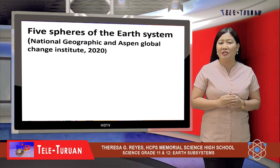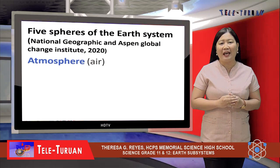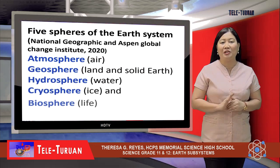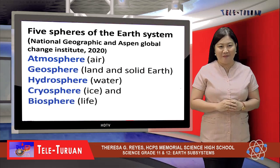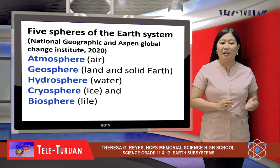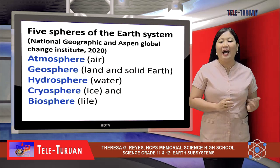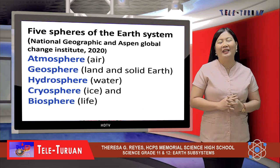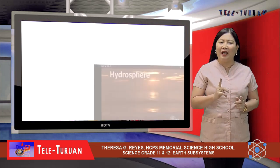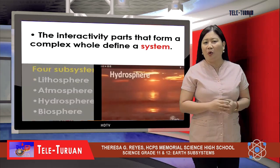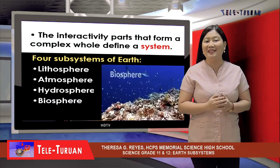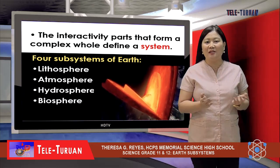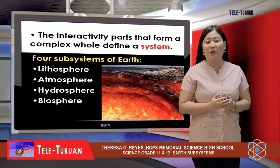According to National Geographic and Aspen Global Change Institute, there are five spheres of the Earth system: Atmosphere, Geosphere, Hydrosphere, Cryosphere, and Biosphere. Remember, the interacting parts that form a complex whole define a system, and these interacting parts are called subsystems or spheres.